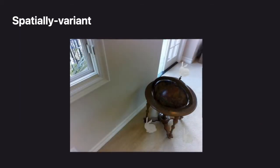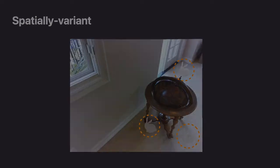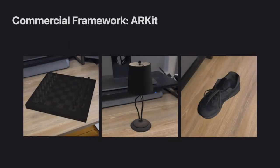Meanwhile, in real-world situations, especially for indoor scenes, lighting could vary spatially, causing objects to appear in different visual styles. Current commercial frameworks, for example ARKit on iOS platform, can support real-time lighting estimation through ambient light sensors, but it does not estimate the spatially varying lighting.